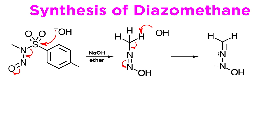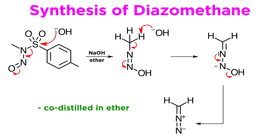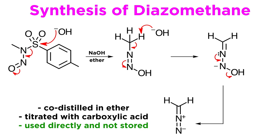Then another hydroxide ion grabs this proton, and we get this. And finally we can imagine this nitrogen pushing its lone pair onto the other nitrogen to kick off this hydroxyl group. And that gets us to the zwitterionic form of diazomethane, which is co-distilled in ether. This is then titrated with a carboxylic acid and used directly, rather than being stored, as diazomethane is quite explosive and this synthesis should only be attempted by trained chemists.